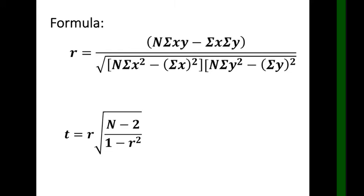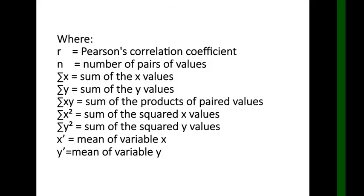For hypothesis testing of Pearson r, we use the t-test or test statistic. The formula is: t equals r times the square root of n minus 2, which is our degrees of freedom, divided by 1 minus r squared. We will use this formula after solving for r. Here, r is the Pearson correlation coefficient, n is the number of pairs of values, and the summations of x, y, xy, x squared, and y squared are as previously defined.